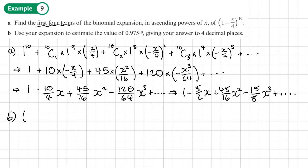So how am I going to work that out? Well, let's have a look at what the question was. It was (1 - X/4)^10. And I want to basically work out what is 0.975^10. So if we match this up, then it must mean that 1 - X/4 = 0.975.